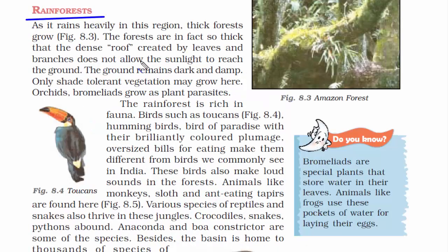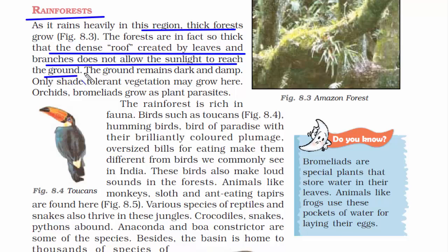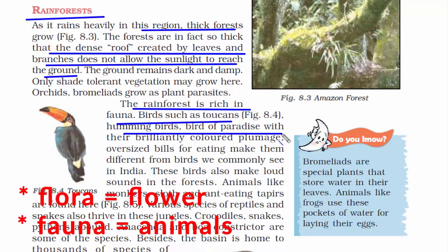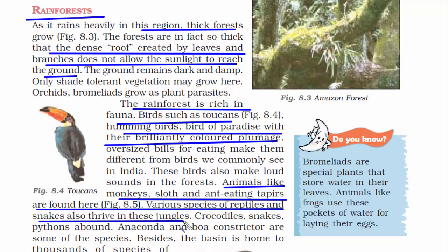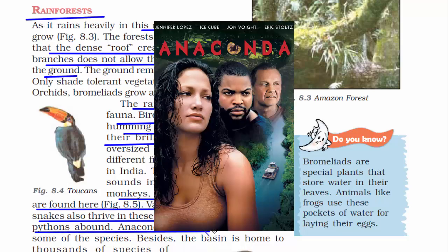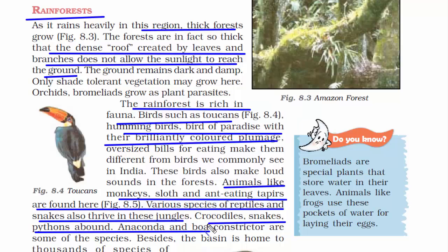Amazon is the world's largest tropical rainforest. The forest cover is so thick that sunlight doesn't reach the ground — leaves and branches block it. This rainforest is rich in flora and fauna. Birds such as toucans, hummingbirds, and birds of paradise are very common. Animals like monkeys, sloths, and deadly ants exist here. Various species of reptiles and snakes also live in these jungles — crocodiles, pythons, anaconda, and boa. By the way, the movie Anaconda was shot in Amazon, so if you've watched it, you'd have a glimpse of what the Amazon jungle looks like.